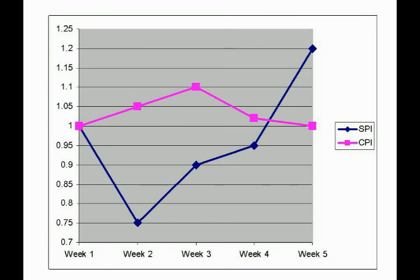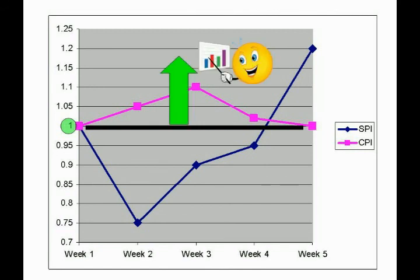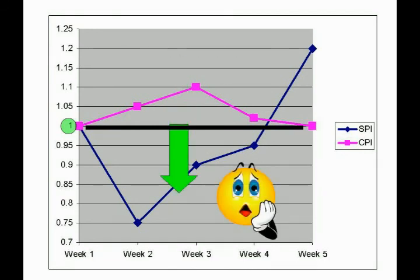The concept to take away is that to get a snapshot of a project's status, an index value of 1 indicates right on schedule and budget. Greater than 1 is good — it means more value has been created than planned, or that value was earned ahead of schedule. A value of less than 1 means behind schedule or over cost.